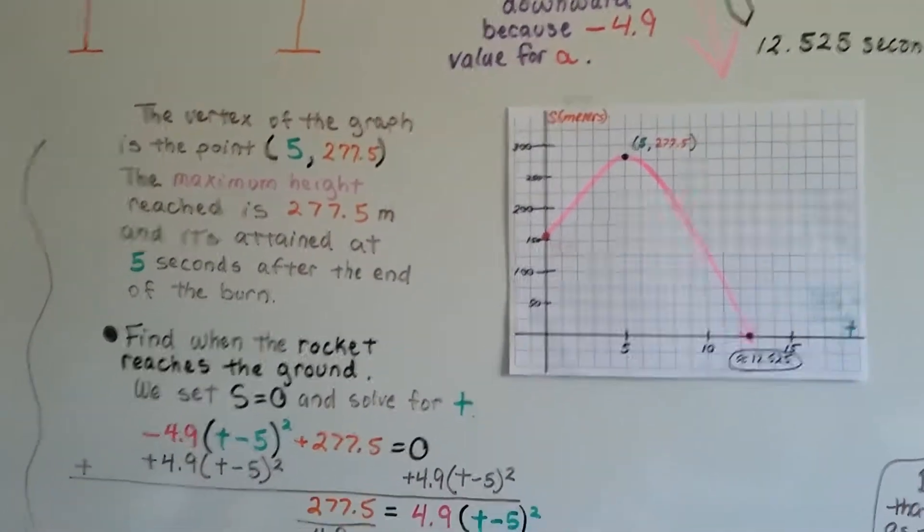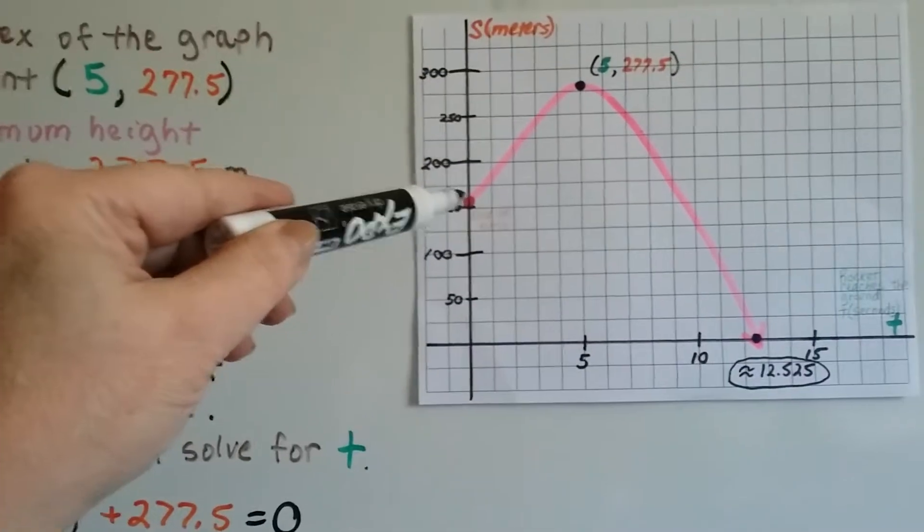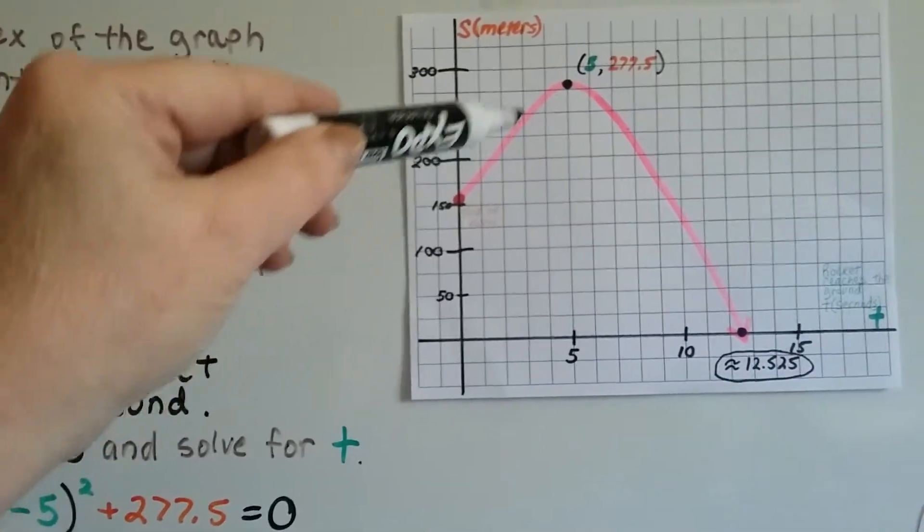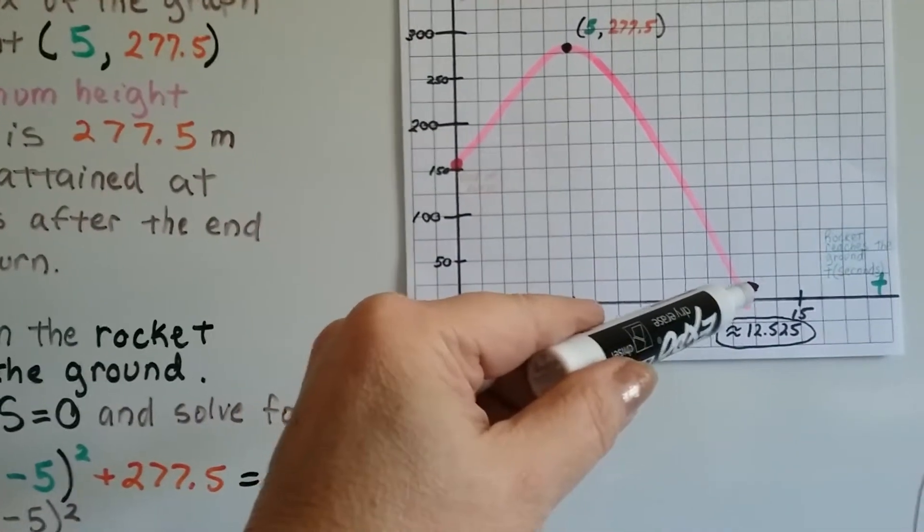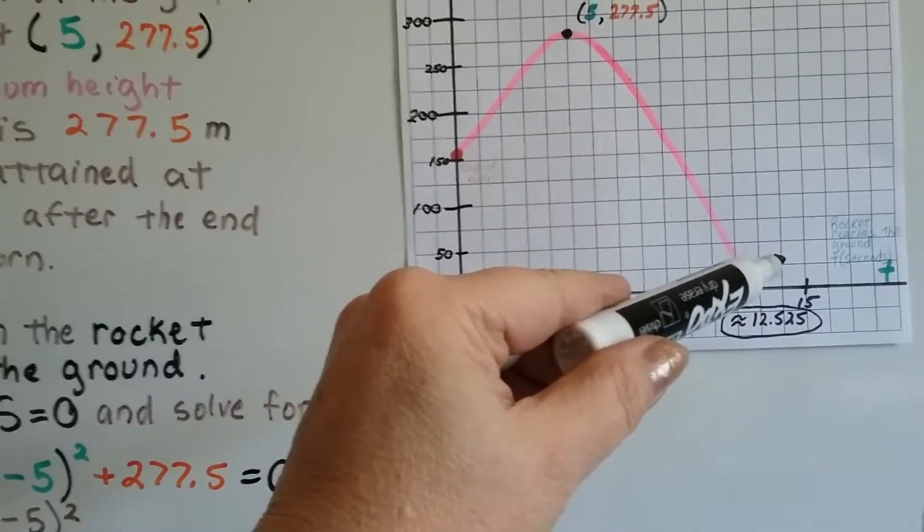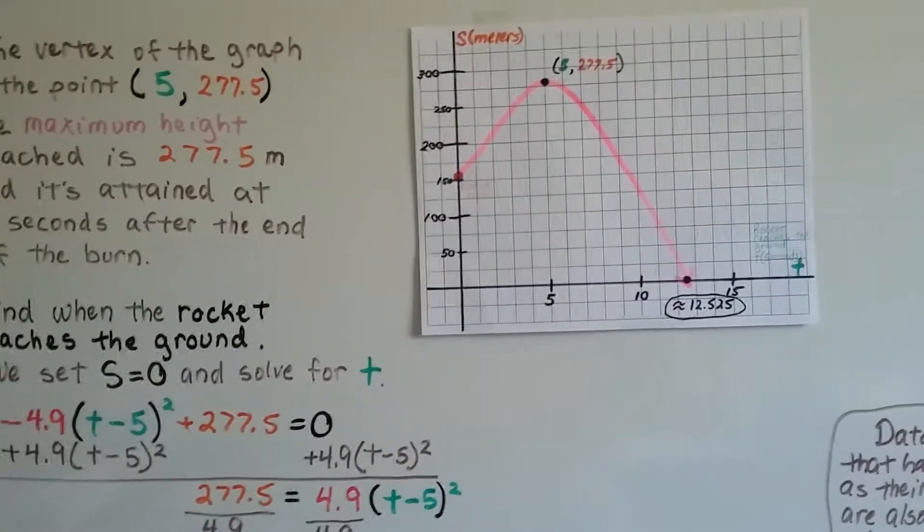Now we need to find when the rocket reaches the ground. Here's the 155 meters. Here's the vertex, and we need to find out when that rocket reaches the ground after so many seconds. I'll show you how I got that approximate amount.